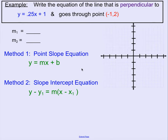This example focuses on writing the equation of a line that is perpendicular to y equals 0.25x plus 1 and goes through the point negative 1 comma 2.